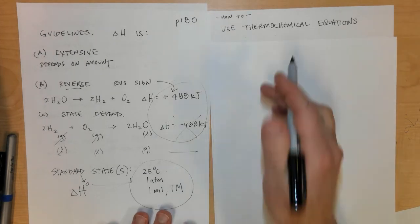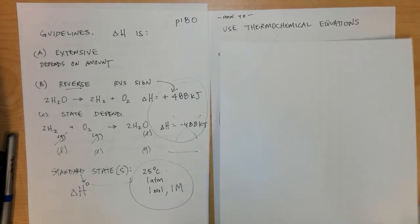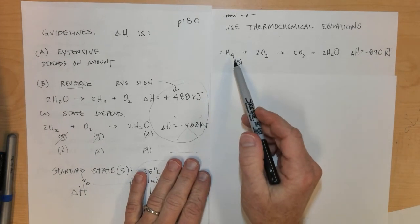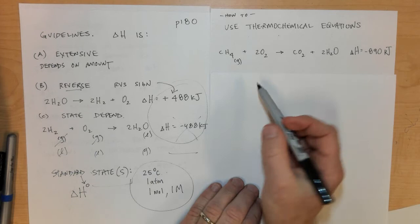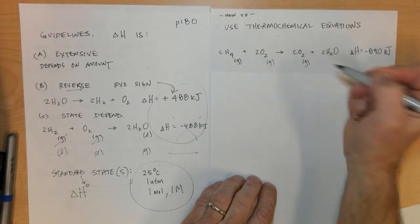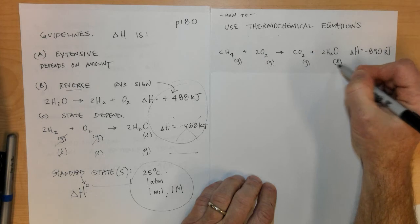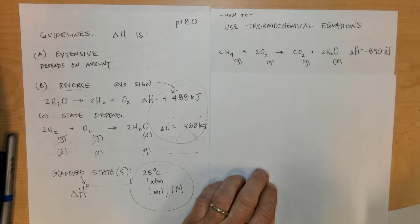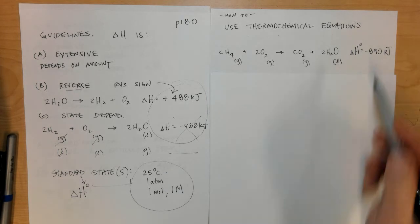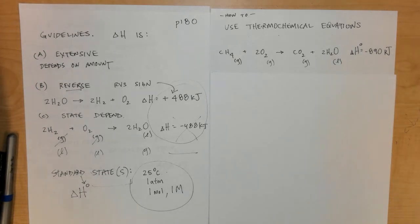How to use thermochemical equations: Let's write down this equation of the combustion of methane. Methane gas plus oxygen gas in its standard state goes to carbon dioxide in its standard state and liquid H2O.